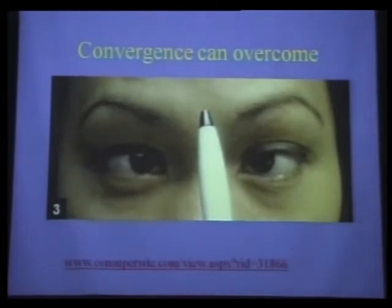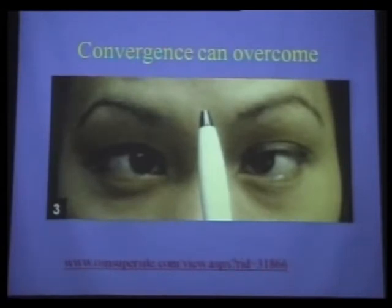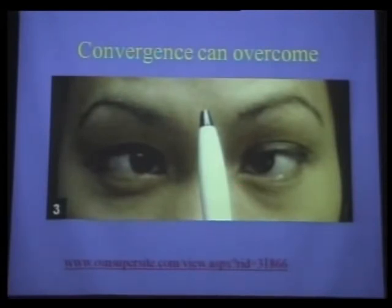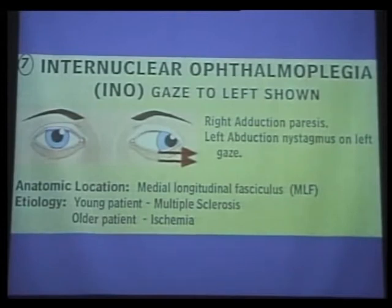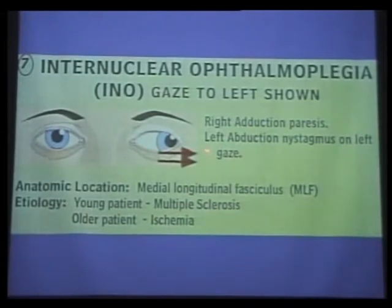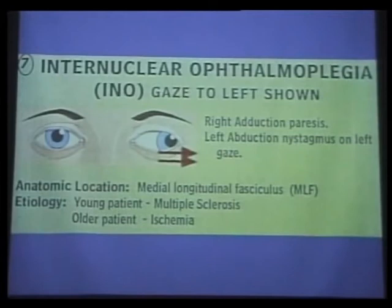When you have horizontal gaze palsy, one-and-a-half syndrome, or internuclear ophthalmoplegia, that's pons. One thing that demonstrates the internuclear pathway is affected is convergence: the near effort shows that the medial rectus muscle and the neuromuscular junction can fire—it's the supranuclear and internuclear input to the nuclei that's preventing the eyes from moving. An INO features an adduction deficit on attempted lateral gaze, with associated horizontal abducting nystagmus in the contralateral eye. In a young patient, that's usually multiple sclerosis; in an older patient, usually infarct. Any structural lesion of the medial longitudinal fasciculus will produce this.